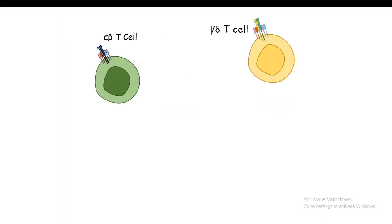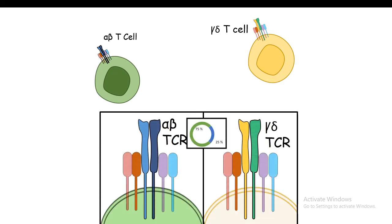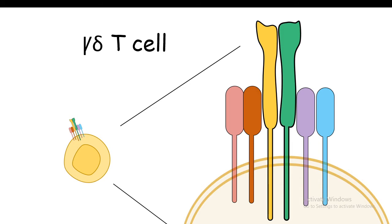In this video we are going to talk about two subclasses of T cells: alpha beta T cells and gamma delta T cells. This classification is based on the difference in their T cell receptor, and the abundance of these two subtypes is also different. Today's focus is the gamma delta T cell and how it differs from alpha beta TCR-containing T cells. The CD4-positive or CD8-positive T cells we generally discuss are alpha beta TCR-containing T cells, classified based on their coreceptor. Here, we focus on classification based on the T cell receptor itself, not the coreceptor.